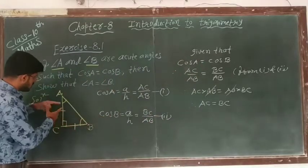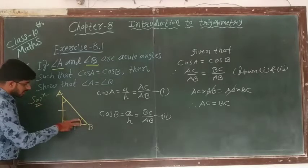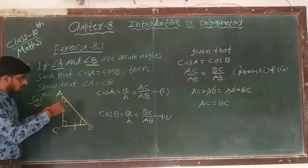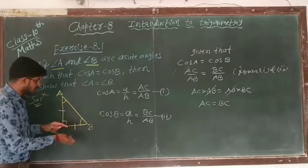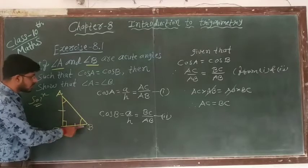equal sides are given. Okay, AC and BC are equal, so their respective opposite angles are also same. It means AC equal to BC, it means angle A equal to angle B.